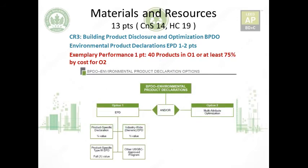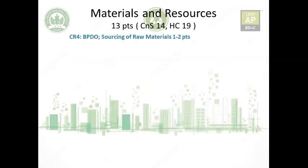For EPD, option one earns one point with product-specific declarations at 0.25, industry-wide at 0.5, and Type 3 at 1.0. Exemplary performance of one bonus point can be earned by using 40 products in option one (instead of 20) or achieving at least 75% by cost in option two (instead of 50%).